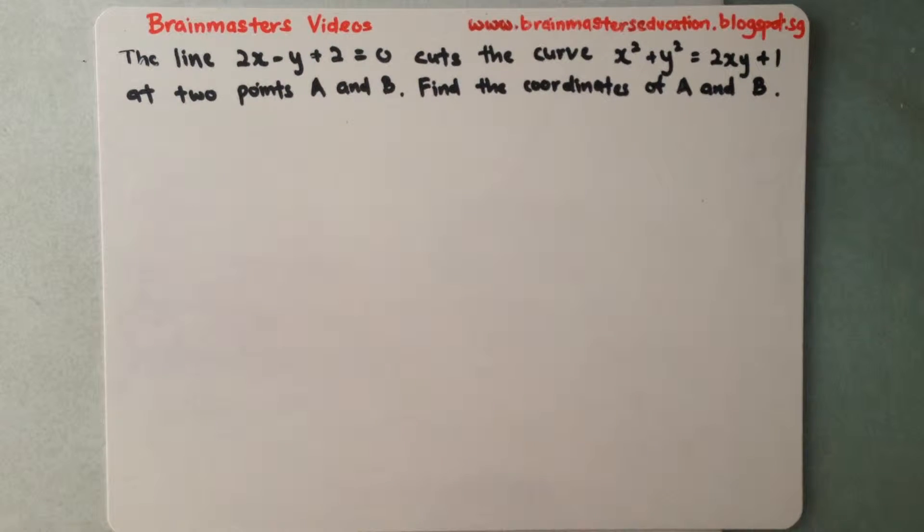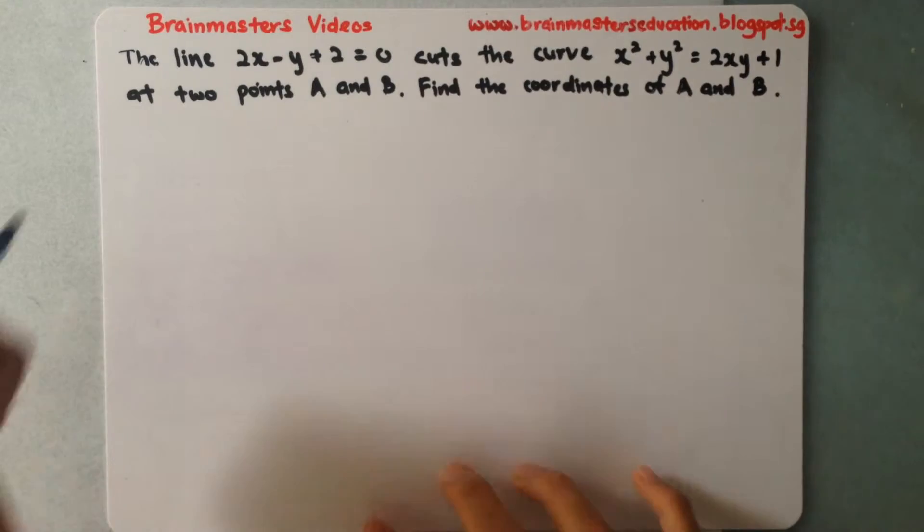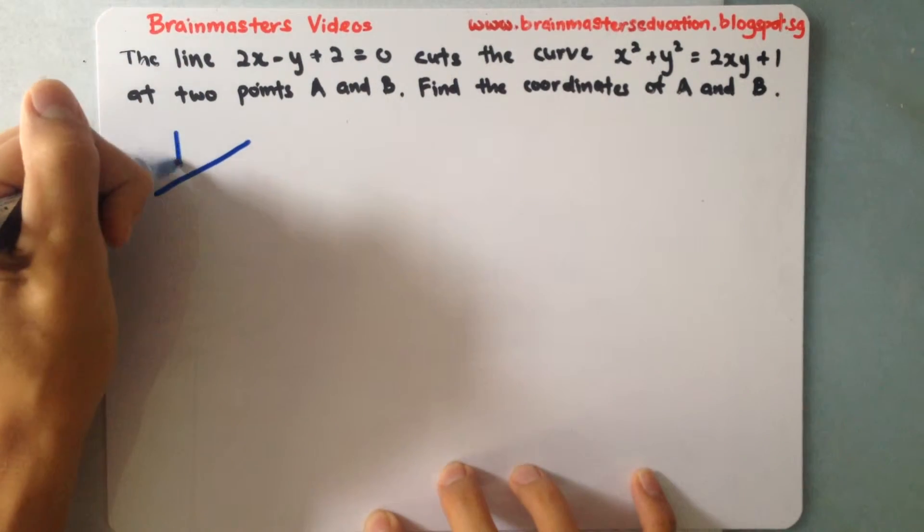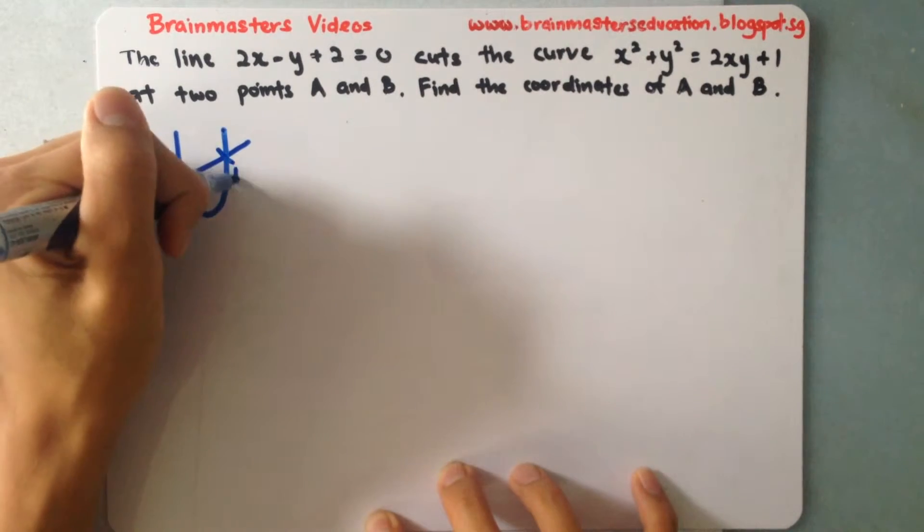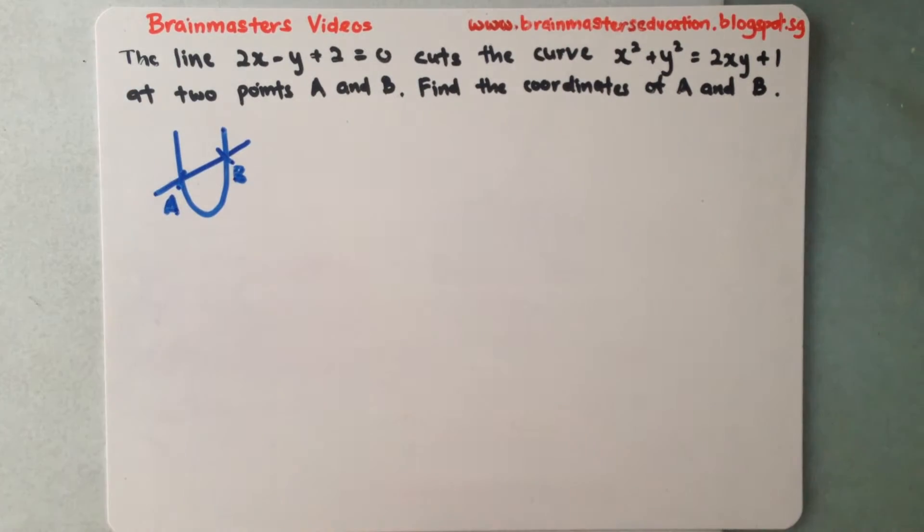Okay so this actually says that there's a line over here that will be intersecting a curve at these two points and I'll have this as A and B. So what we'll be doing is we will be using simultaneous equations.